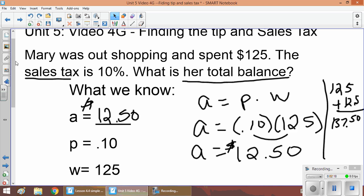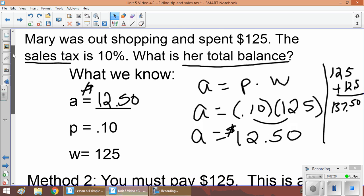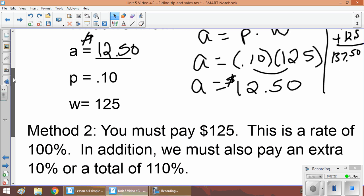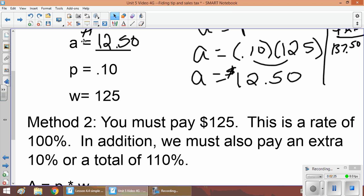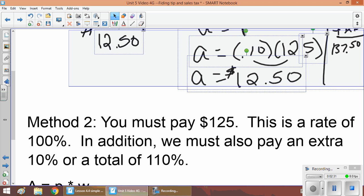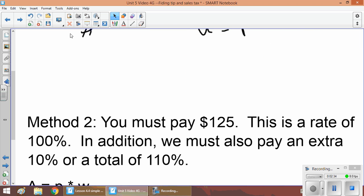This is Method 1. In Method 2, let's take a look at this scenario. In Method 2, we know that you have to pay the $125. This is a rate of 100%. We also know that we want to pay that extra 10% because that's the tax that we have to pay. We not only pay the 100% for 125, but we also pay that 10% more, so we're really paying 110%.